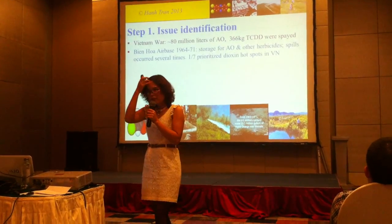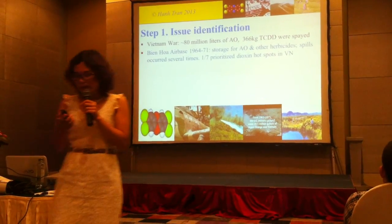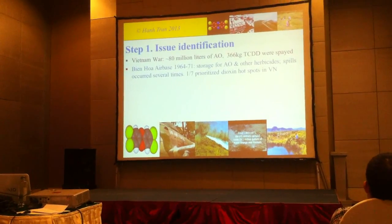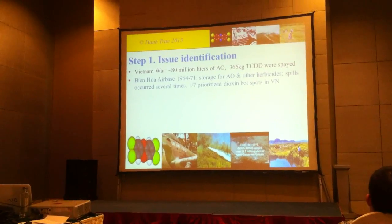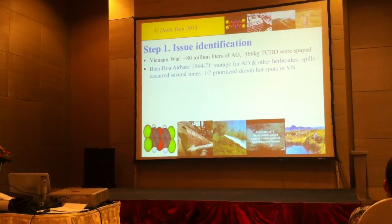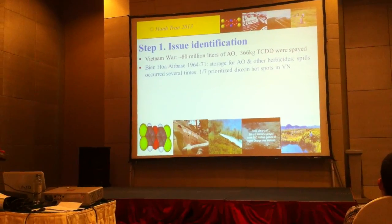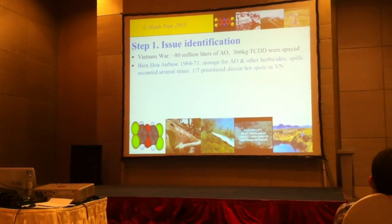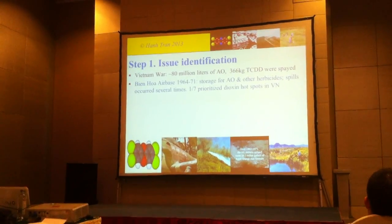The first part of risk assessment is issue identification. As you already saw in the video, Vietnam had a huge amount of chemicals used by the US Army. In total, they estimate about 366 kilograms of dioxin already supplied in the chemicals as a contaminant. These are two out of seven priority dioxin hotspots in Vietnam nowadays.